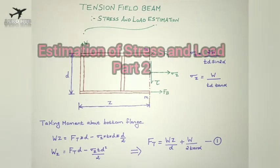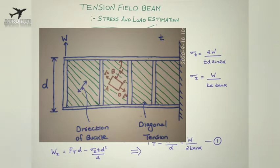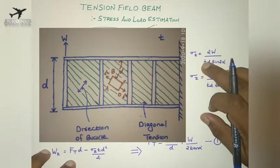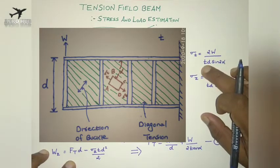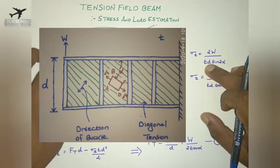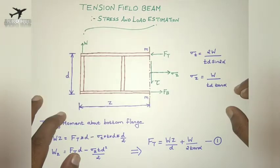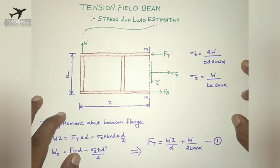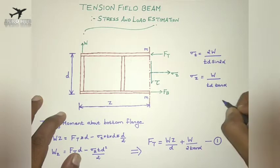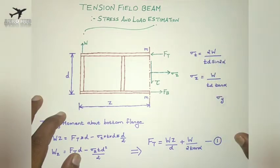Welcome back to AeroHub and this series of lectures in aerospace structures. In the previous lecture, we discussed estimation of stress and load in the tension field beam. We estimated the diagonal tension stress: sigma_t = 2w/(t) * (1/d) * sin(2α), where α is the angle of diagonal tension, t is the thickness, and d is the depth or width of the beam. We also estimated sigma_z, the stress in the horizontal direction, equal to w/(td) * tan(α). In this lecture, we will estimate sigma_y, the vertical stress acting on the tension field beam due to the diagonal tensile stress sigma_t.